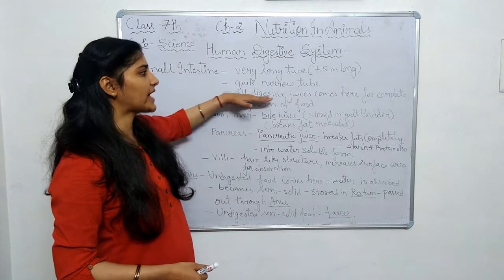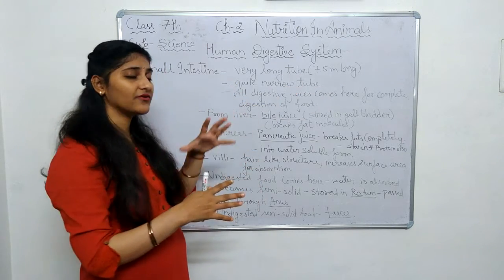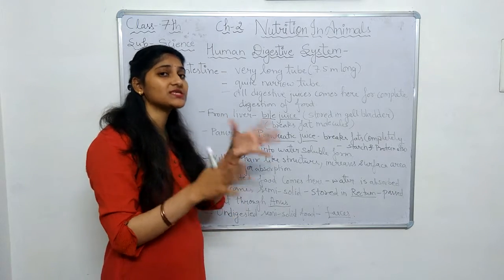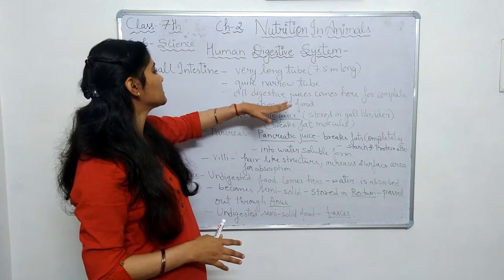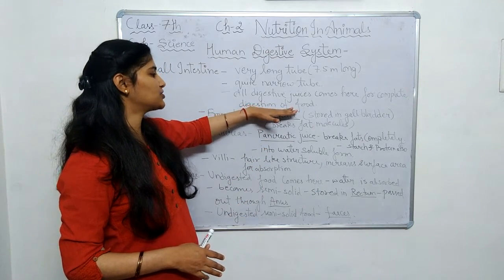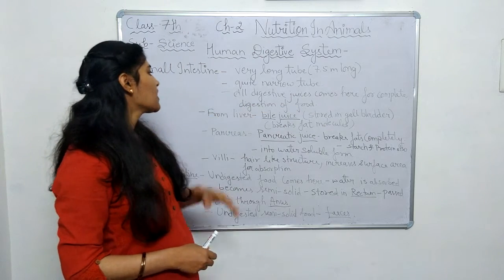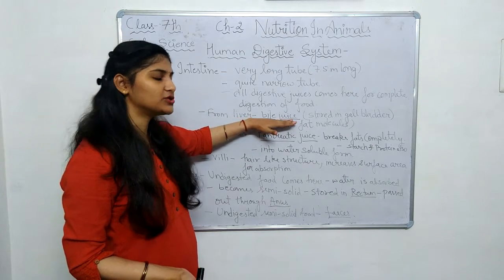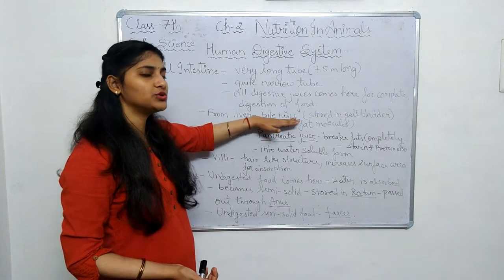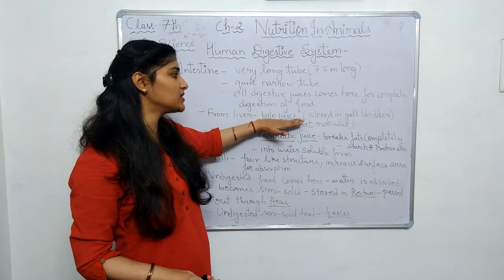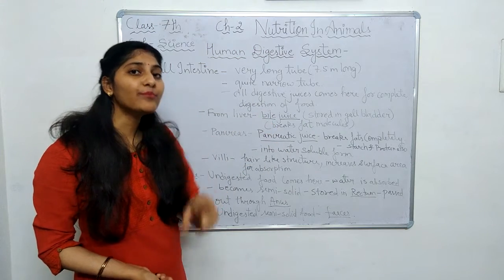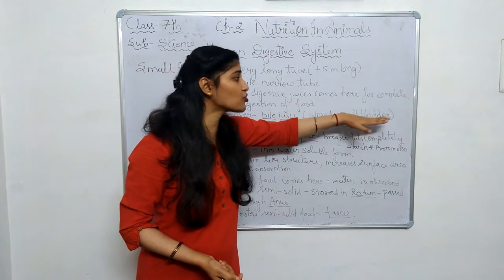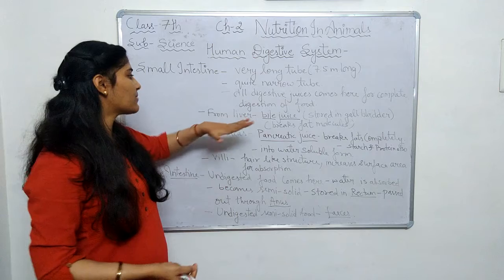In the small intestine, all the digestive juices come from different glands. We have read about the pancreas and the liver — the juices secreted there come here for the complete digestion of food. From the liver, the digestive juice secreted is bile juice. It is temporarily stored in the gallbladder, but it is secreted by the liver.